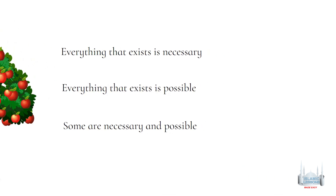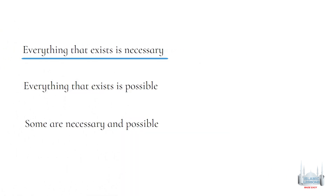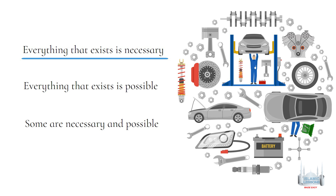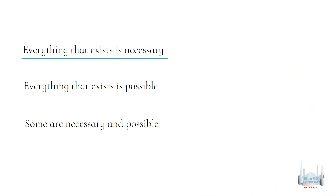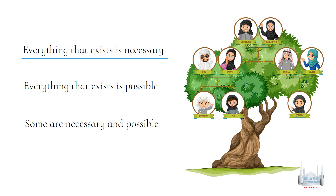Let's look through the possibilities. 1. Everything that exists is necessary — is that true? That is impossible. Why? A car or a human — are they necessary? Did they have a cause or depend on something else to exist? Of course they did. The car depends on material and engineers, etc. A human depends on its mother and its father. So this crosses out: everything that exists is necessary.